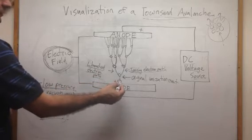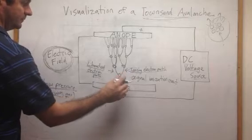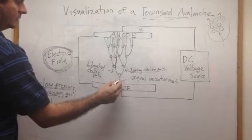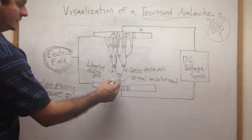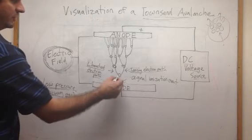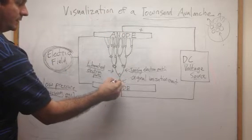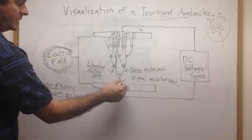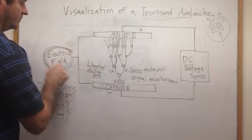What happens is you have an initial ionization event, right here, in which you have a particle losing its electron. Once it loses its electron, the electron will want to go towards the anode, and the positive ion will want to go towards the cathode. But since the electrical field is still present,